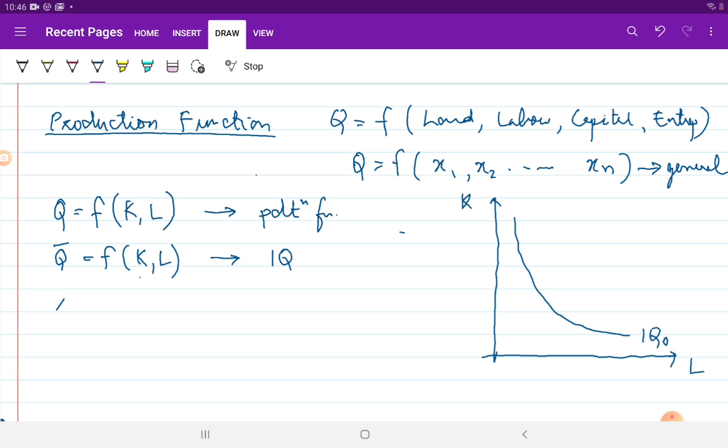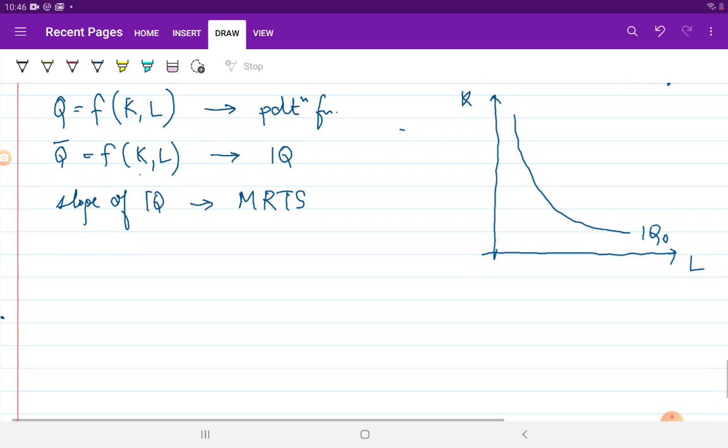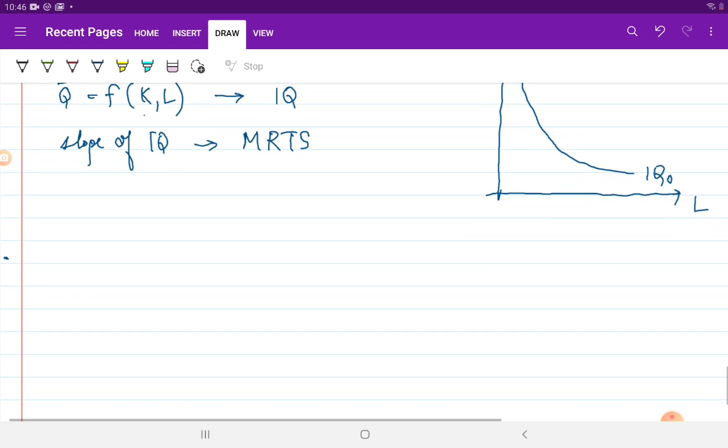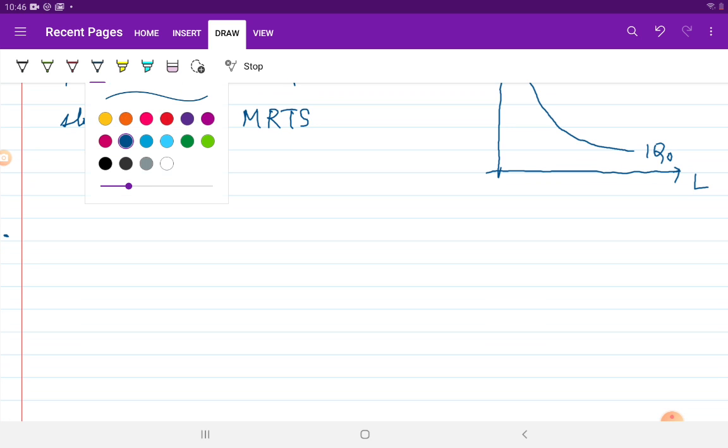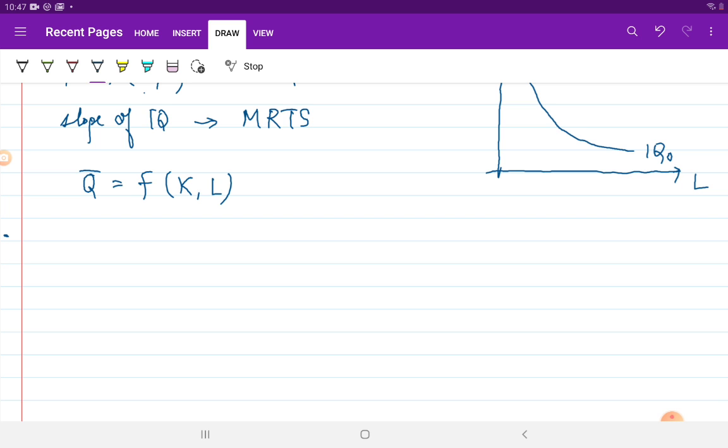So, the slope of the iso-quant is called the marginal rate of technical substitution. And you can derive the formula for the marginal rate of technical substitution by the same method as we derive the slope of the indifference curve. So, we are rewriting the equation of the iso-quant.